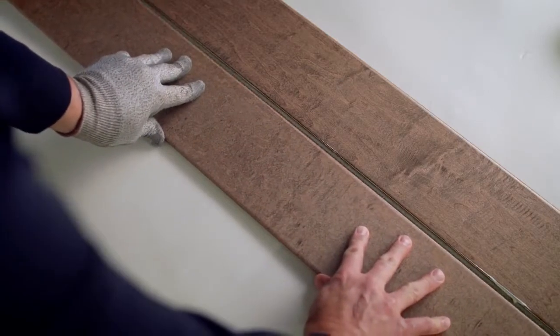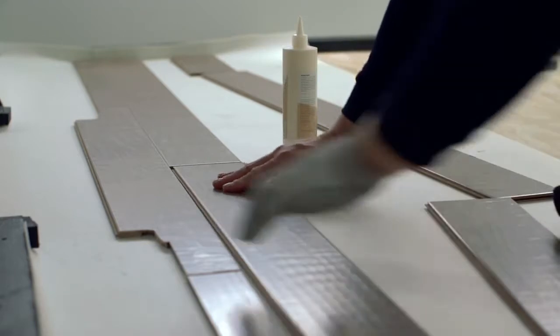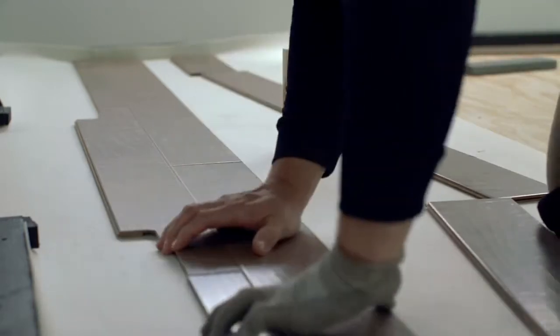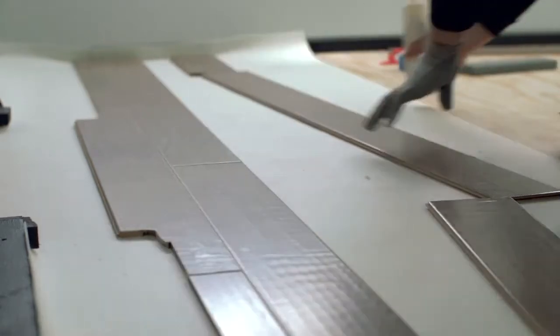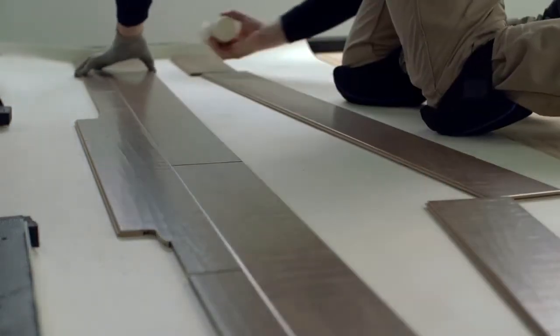For the second row, go back to the right side of the room. Take the first board of the second row and run a continuous bead of adhesive along the groove of the long side that's facing the first row. Lock its long groove into the first row. Then take the second plank of the second row, apply a bead of adhesive down the groove of both the end joint and the long side, and connect it to the first plank of the second row and to the first row.